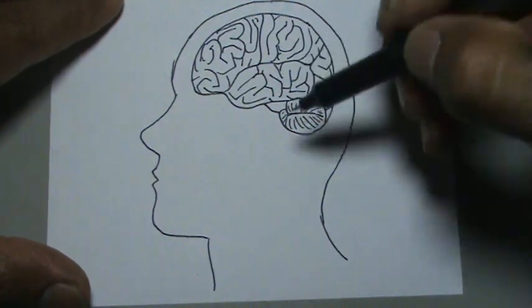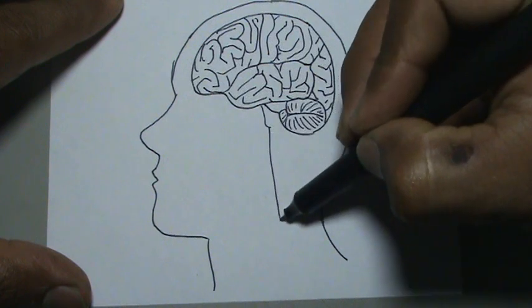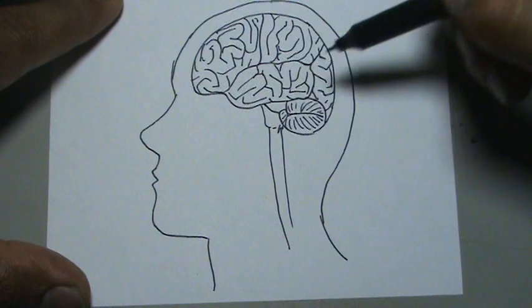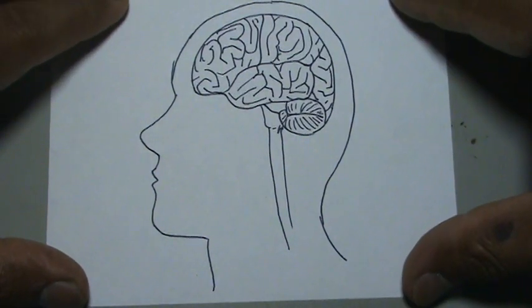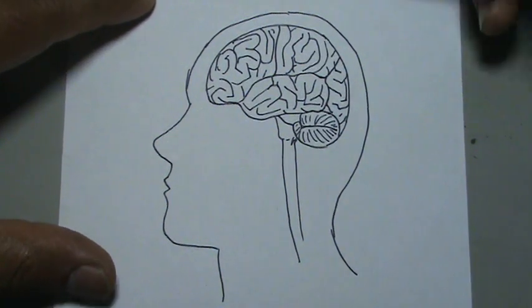Nos falta aquí abajo, viene un tubito que es la conexión con el resto del cuerpo.